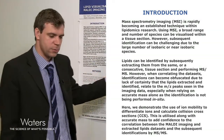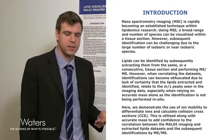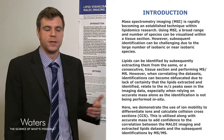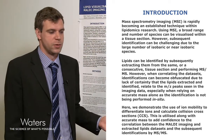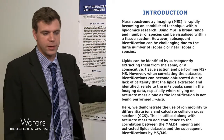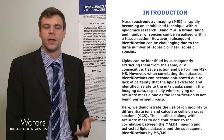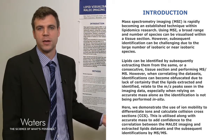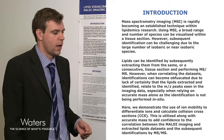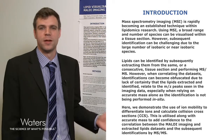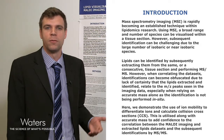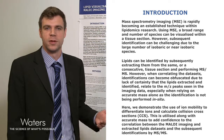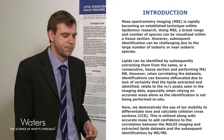One thing you can do is perform in situ MS/MS on the tissue section. This allows you to use the spatial correlation information to ensure that the lipid you're looking at is the correct lipid for your image. However, you're limited in the number of species you can identify through this approach due to the limited surface area of the tissue section.